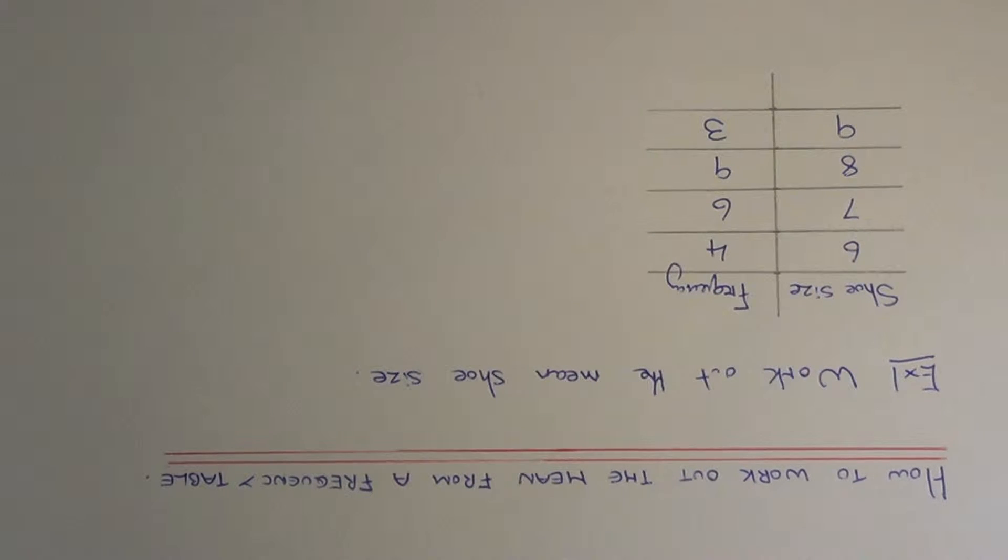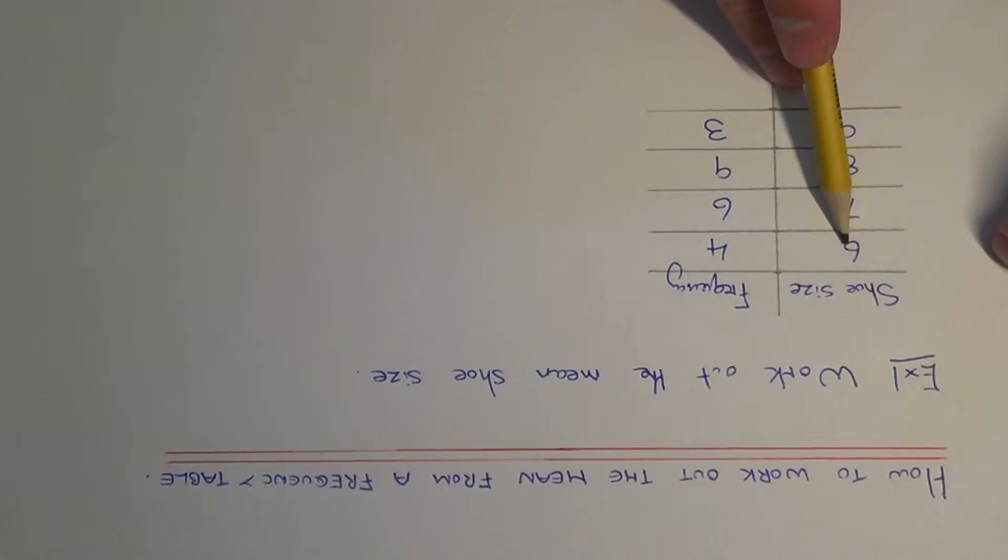We need to work out the mean shoe size from this frequency table shown here. So we've got four people with a shoe size of six, six people with a shoe size of seven, nine with a shoe size of eight, and three people have a shoe size of nine.